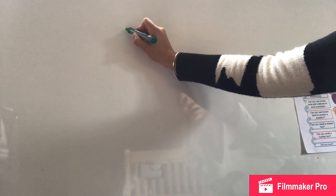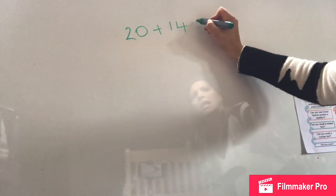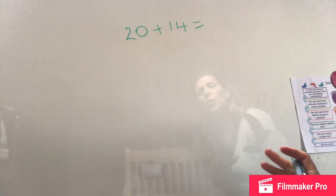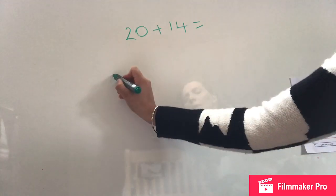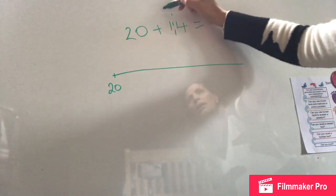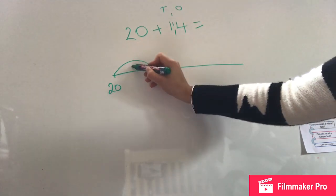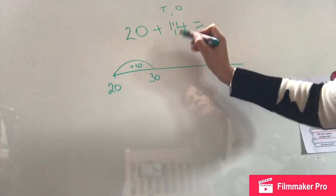I'm going to give you a problem to solve now — a number sentence to solve and then we're going to go through it together. So my number sentence is going to be 20 add 14 equals. The easiest way for me to work that out would be to use the formal method. If you can't remember the formal method, you can use a number line. So I'm going to show you on a number line quickly. So 20, and then I'm going to partition this number — I've got my tens and my ones.